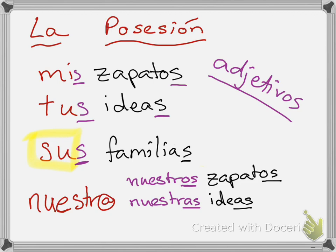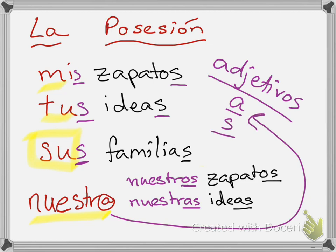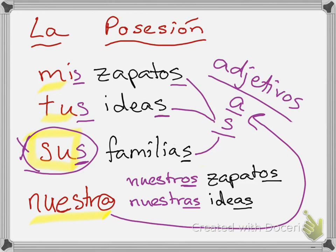So with possessive adjectives, you need to think about: is it feminine — does it end in an 'a'? Or is it plural — is what is possessed plural? Not the possessor, but what is possessed. Familias, ideas, zapatos — that's what matters. And this one is always tricky because people think 'sus' means 'theirs' because there's multiple of them, whereas 'su' would be his or hers — but that's not the case. 'Su' can mean all of those; it depends on what comes afterwards.